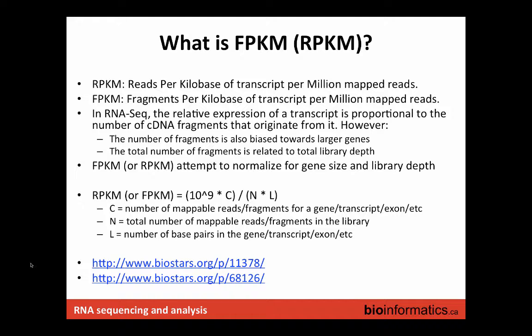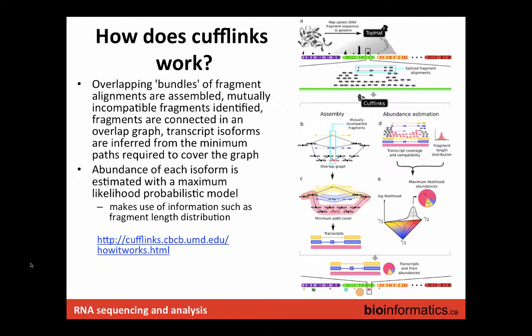There's a lot of discussion about how to calculate FPKM and how to interpret it on BioStars. Cufflinks produces an FPKM estimate, but it's a lot more complicated than that — it's actually really complicated. You have to be careful that not all FPKMs are created equally. We sometimes implement a very simplistic FPKM calculation where we literally just take the reads, align them to genes or transcripts, and do the simple calculation. But more often we use software like Cufflinks that takes a much more sophisticated approach.